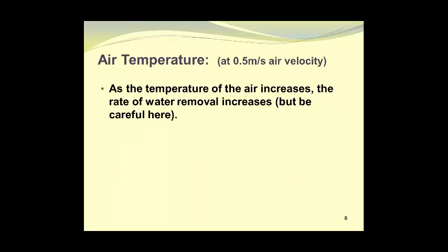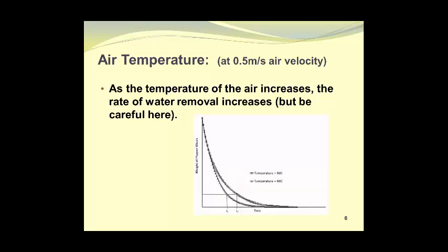Now let's take a look at another important variable: air temperature. As the temperature of the air increases, the rate of water removal increases as well. But we have to be careful. In these tests, we use a uniform air velocity of 0.5 meters per second. The graph uses two temperatures — 50 degrees Celsius and 60 degrees Celsius — with time on the horizontal axis and the weight of pepper slices on the vertical axis.